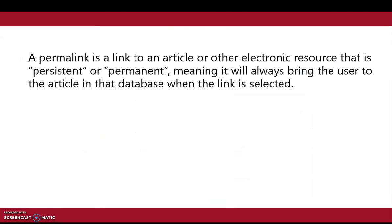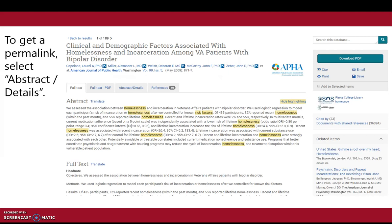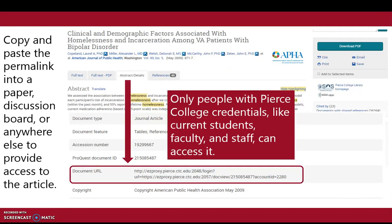A permalink is a link to an article or other electronic resource that is persistent or permanent, meaning it will always bring the user to the article in that database when the link is selected. To get a permalink, select Abstract or Details. Copy and paste the permalink into a paper, discussion board, or anywhere else to provide access to the article.